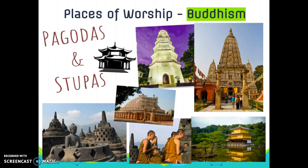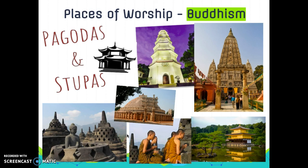A stupa is representative of Buddha himself and living in harmony with nature. The earliest stupas in Buddhism actually contained portions of Buddha's ashes, and as a result the stupa began to be associated with the body of Buddha. People go to these stupas, just like they do the pagodas, to individually worship and meditate on their religion.